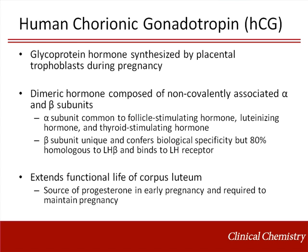Human chorionic gonadotropin, or HCG, is normally synthesized by placental trophoblast during pregnancy. It is a dimeric glycoprotein hormone composed of non-covalently associated alpha and beta subunits. The alpha subunit of HCG is identical to the alpha subunit of three hormones synthesized by the anterior pituitary gland.